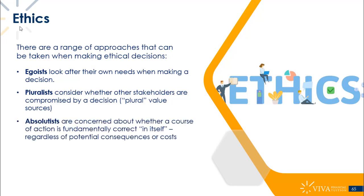Absolutists are concerned about whether a course of action is fundamentally correct in itself. They don't really care about the consequences of actions — they're just worried about whether the action itself is ethical or unethical. For example, an absolutist about lying would say that lying is always wrong in any circumstance. Most people think that's probably not true, because you can think of circumstances where you might have an ethical obligation to tell a lie.